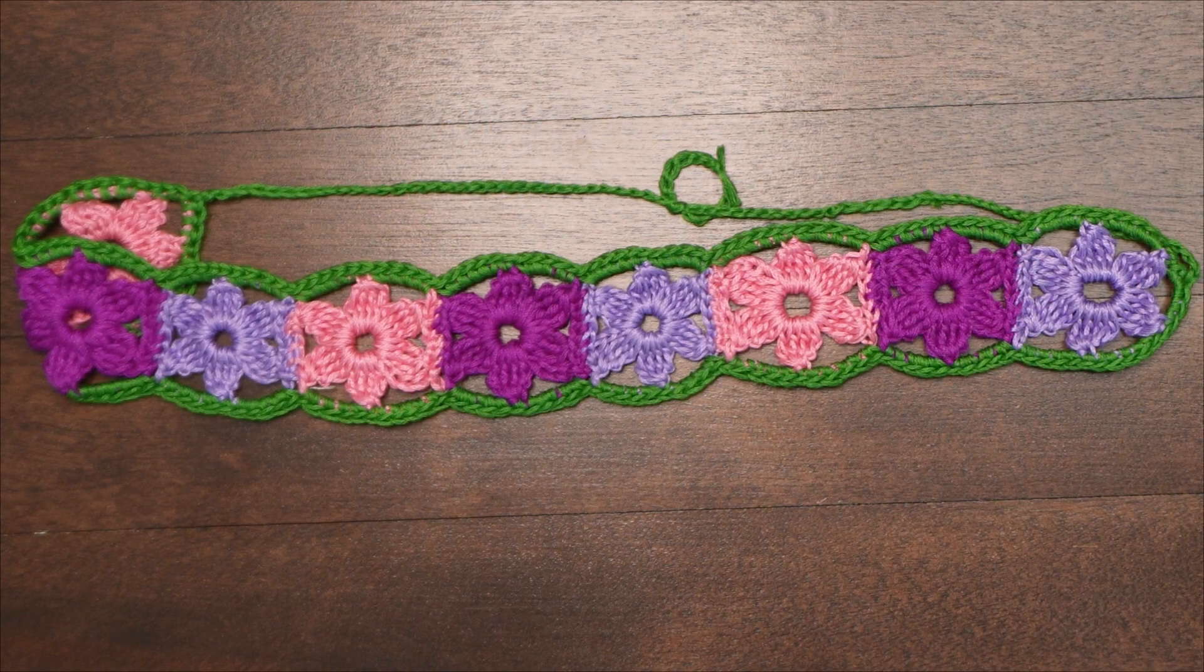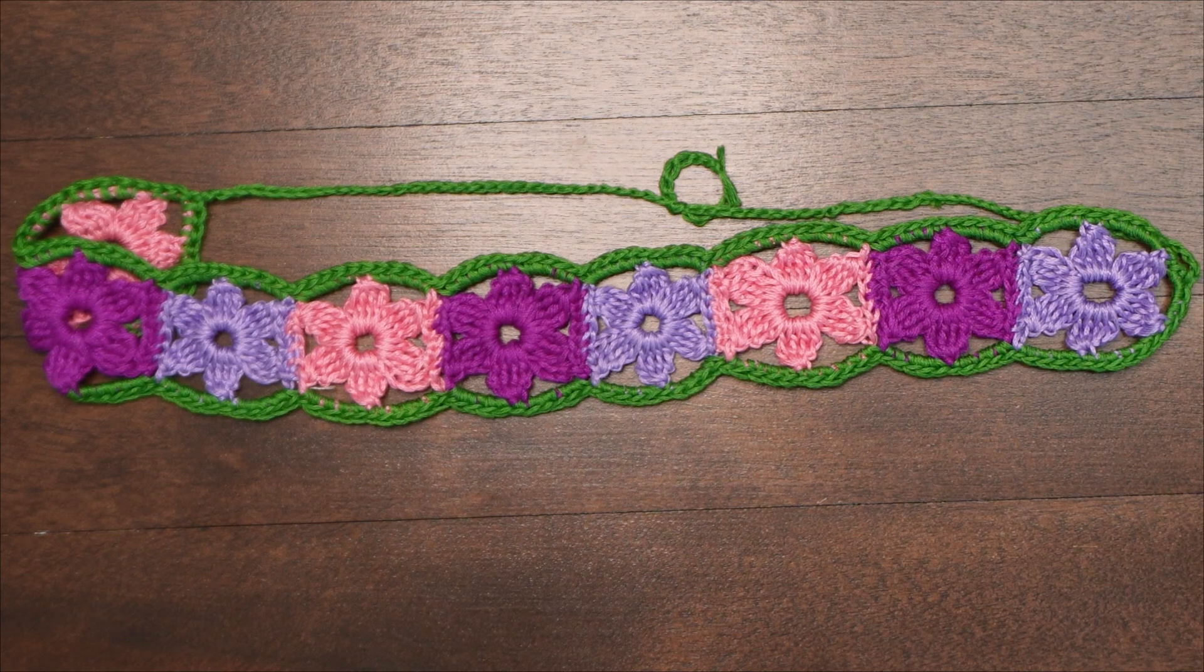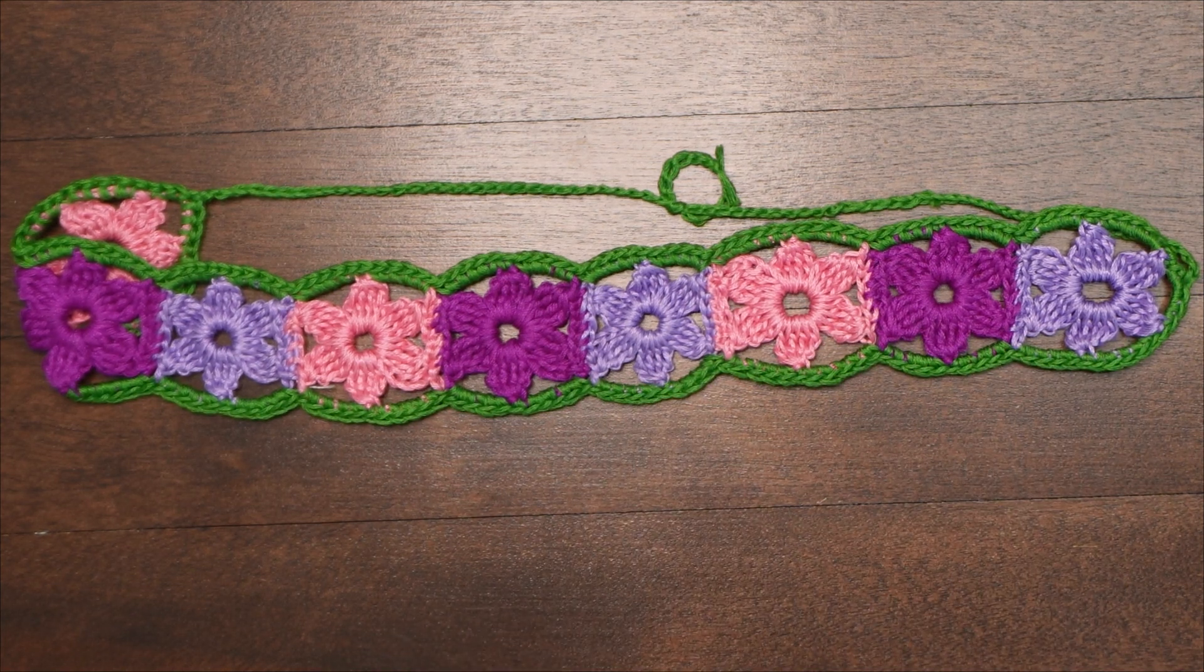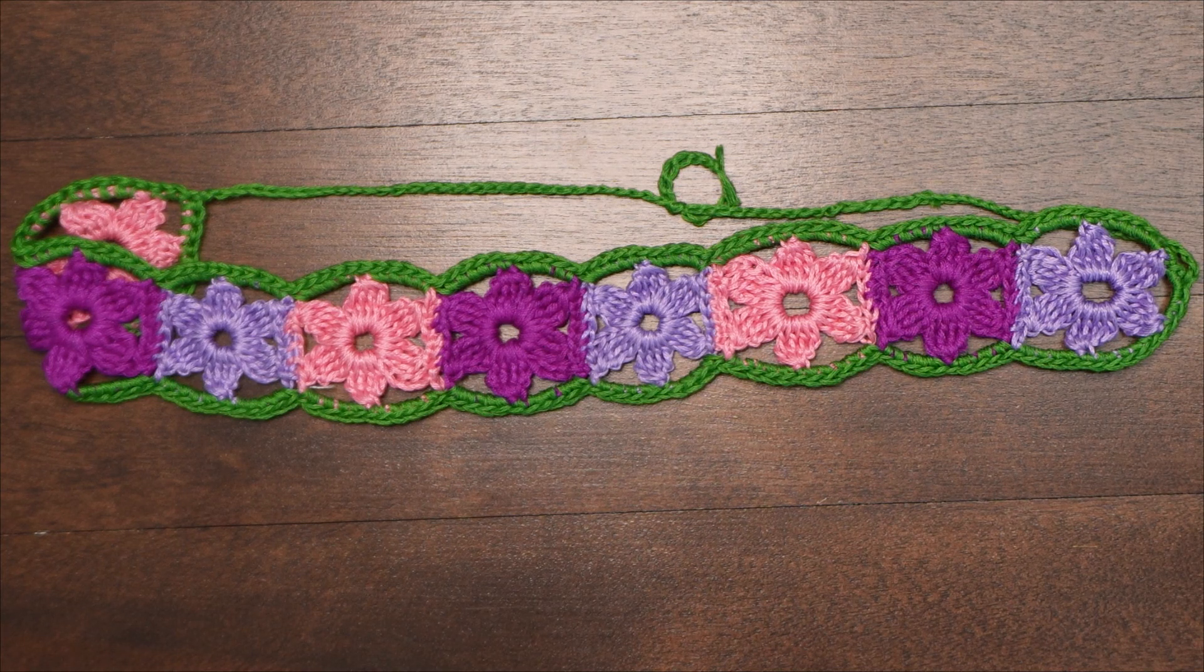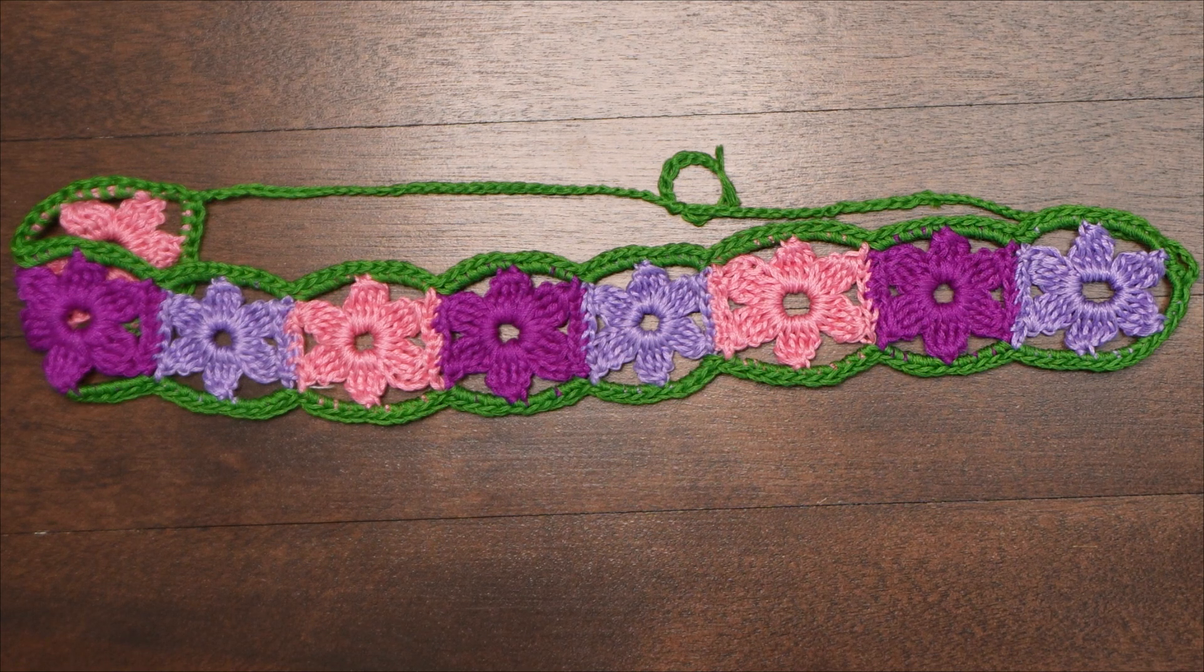It's made with only four skeins of embroidery floss. One skein of each of the three colors for the flowers and one for your edging color, which in this case is the green. So it's very inexpensive and quick to make, and it just makes a very sweet little headband.